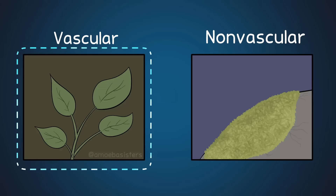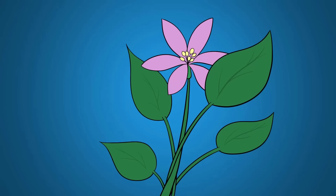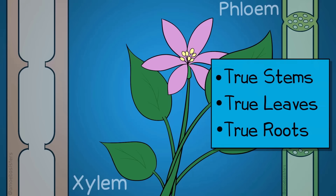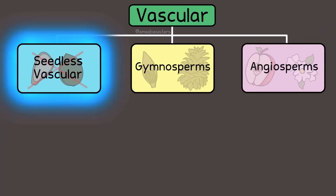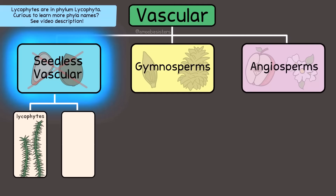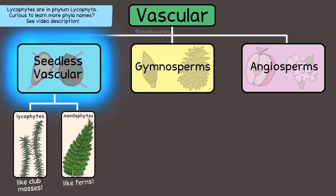Now let's briefly discuss vascular plants. Again, vascular plants have xylem and phloem. These plants have true stems, leaves, and roots. We can arrange vascular plants into three general categories. The first category: seedless vascular plants. As their name suggests, they have no seeds. This group includes a phylum containing lycophytes like club mosses — which are different from the moss in bryophytes — and a phylum containing monilophytes like ferns.